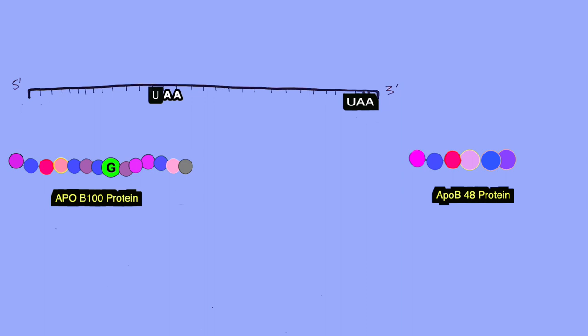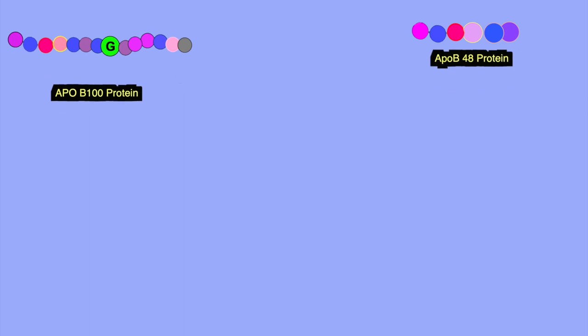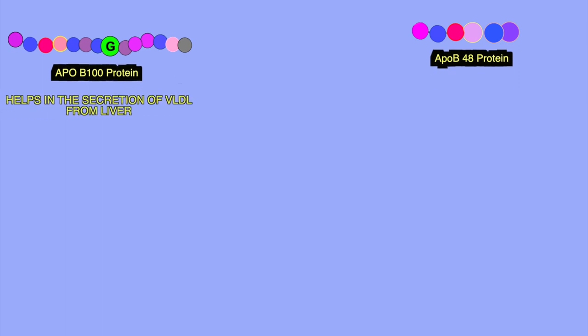Furthermore, let's see what are the core differences in these proteins. Here we see the apoB100 protein helps in the secretion of VLDL from liver. It is structural protein for VLDL, IDL and LDL. And most importantly it acts as ligand for LDL receptor.